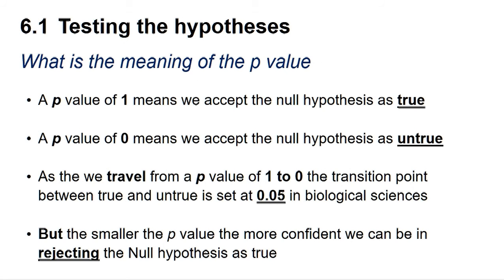So what is the meaning of the P value? A P value of 1 means we can accept the null hypothesis as true, whereas a P value of 0 means we can accept the null hypothesis as untrue. As we travel from a P value of 1 to 0, the transition point between true and untrue is set at 0.05 in the biological sciences.